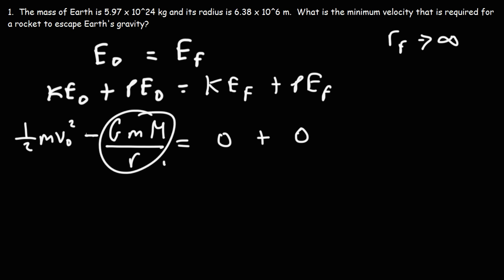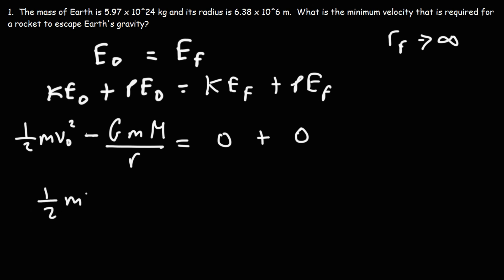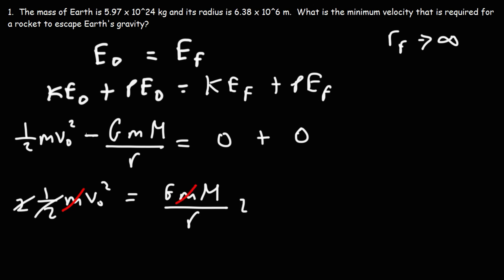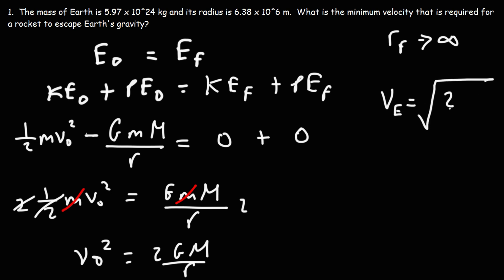Moving that expression to the other side, we have 1/2 m v-initial squared equals G times M times m over R. Dividing both sides by m and then multiplying both sides by 2 to clear the fraction, we take the square root of both sides. The escape velocity is equal to the square root of 2GM over R.